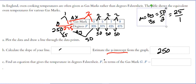Calculate slope, slope is 25. Find an equation that gives the temperature in terms of gas marks. So F equals 25g plus 250.